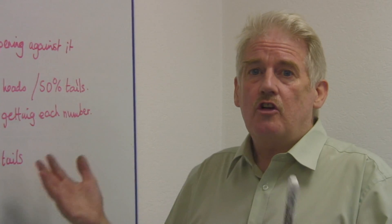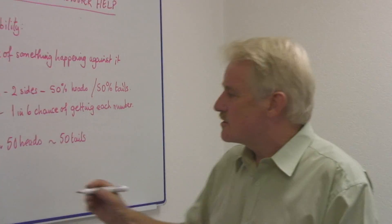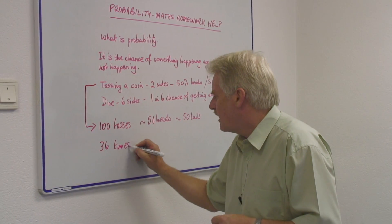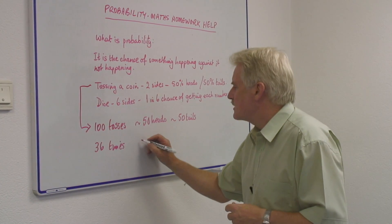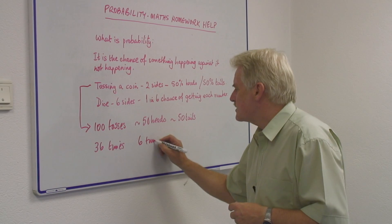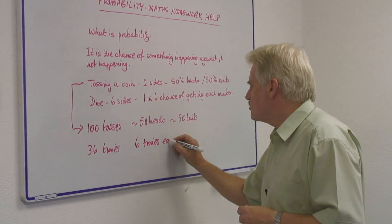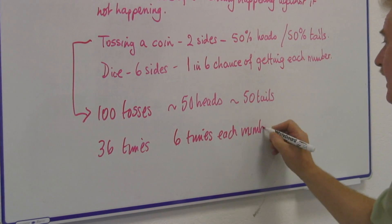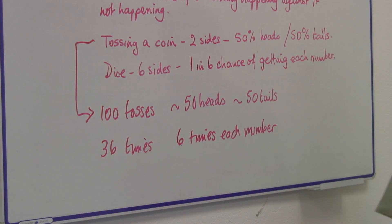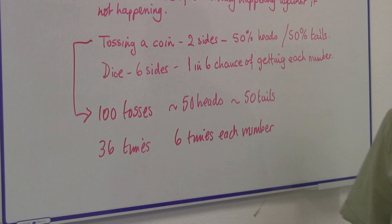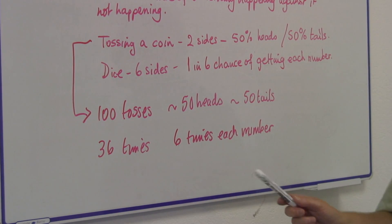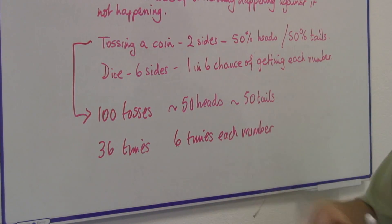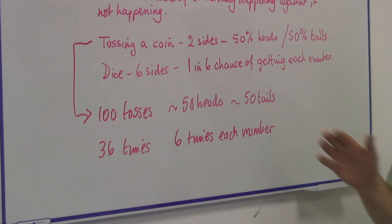So if I toss it 36 times, nice easy number, 36 times, I would expect six times each number. If I actually do the experiment, I will probably find it lands five times with a six, eight times with a five and so on. It won't give me an exact number.